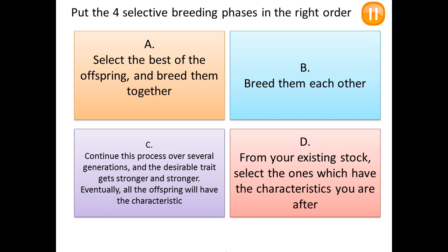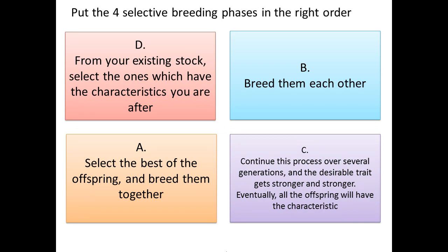Now it's your turn. There are four main steps of selective breeding but they are not in the right order — pause the video and put them in the right order, just write the letters. The correct order is: D — select the ones where you have the characteristics you are after; B — breed them; A — select the best of the offspring; C — breed them together. Continue this process over several generations. So the answer is D, B, A, C.